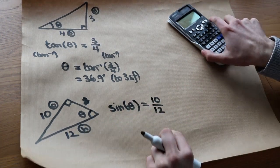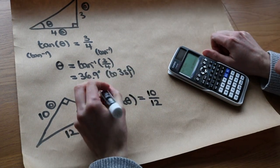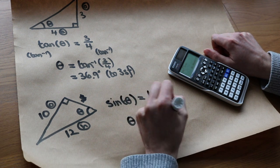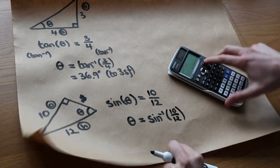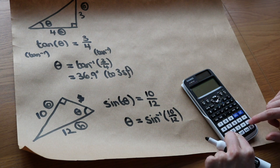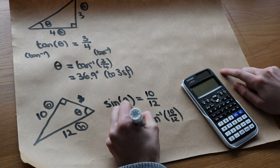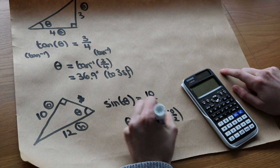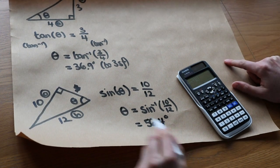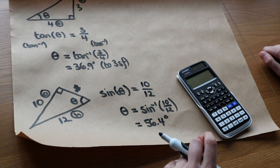To get rid of that sine in front of the theta, we do inverse sine of both sides. So that gives me theta is inverse sine of 10 over 12. I just plug it into my calculator. So inverse shift sine of 10 over 12, and that gives me 56.4 degrees to three significant figures. We do a sensible check. Does that look right? Yes, it kind of looks more than 45 degrees. That looks like it's going to be sensible.